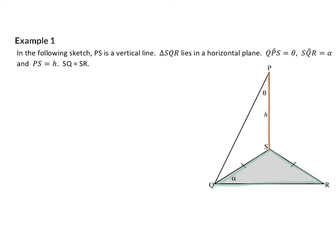Therefore, I will immediately stop and indicate to myself that PSQ is a 90-degree angle. Then we are also given that angle QPS is theta, angle SQR is alpha, the length of PS is H, and that SQ is the same length as SR. Therefore, I will immediately add that angle R is also alpha because of angles opposite equal sides.